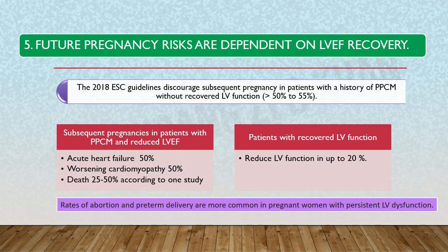Future pregnancy risk should be individualized, most importantly based on the level of LV ejection fraction recovery. Patients with impaired LV systolic function should avoid pregnancy due to risks of acute heart failure, worsening cardiomyopathy, and death at rates of 25 to 50 percent. Even patients with recovered EF face a 20 percent risk of recurrent LV impairment in subsequent pregnancies.